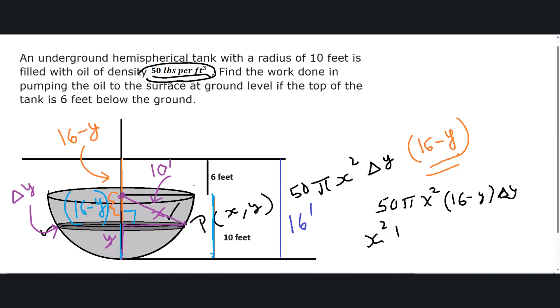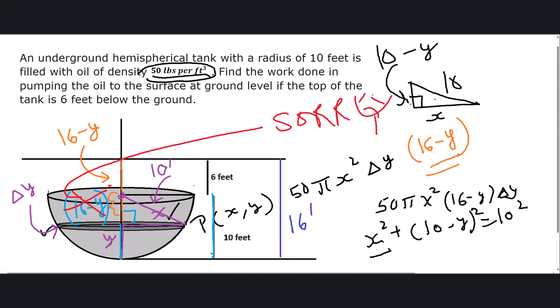Let me fix this. So this distance, let me make another triangle. This is x, this is 10, and this will be 10 minus y. So what we have by the Pythagorean theorem is x² plus (10 - y)² equals 10². So x² will be 100 minus (10 - y)².